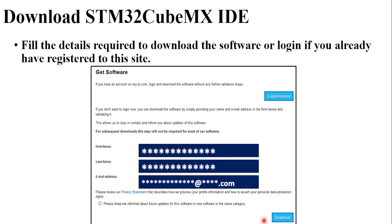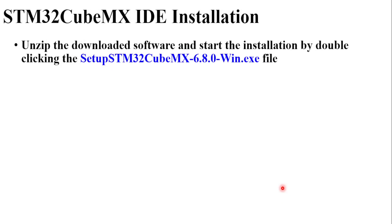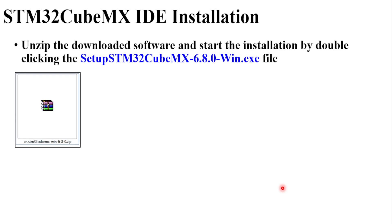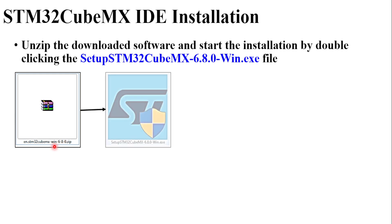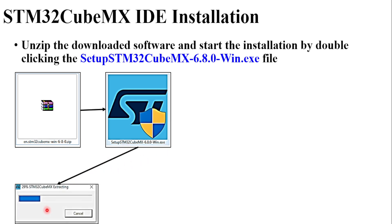Then click download. After downloading you will get a zipped file, which you will have to unzip. After unzipping you will get the EXE file, then double-click the EXE file and it will start extracting the STM32CubeMX.